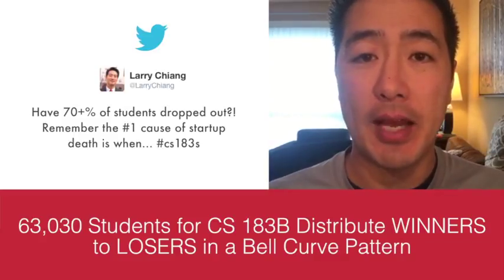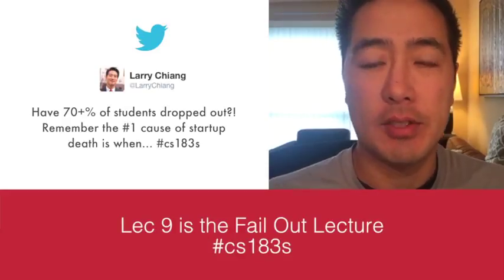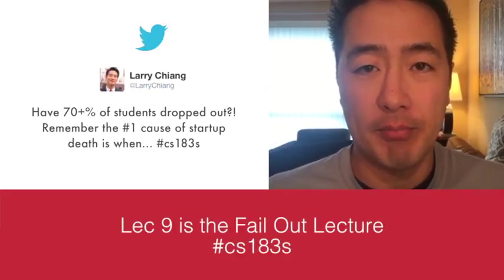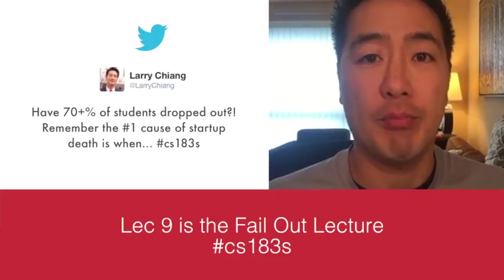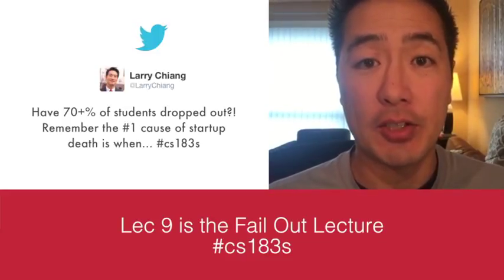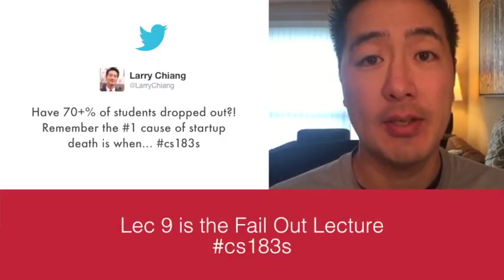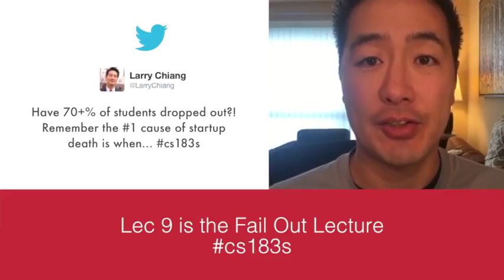70% of people dropped out of CS183S. If you look at this blog post I wrote called '63,030 students taking CS183B,' 20 will set the bell curve. This is just what the numbers entail. People don't sell, people don't promote — and that's why, if you want to do well on the entrepreneurship bell curve, it's doing things that don't scale but have momentum. It's selling and promoting. It's getting distribution.